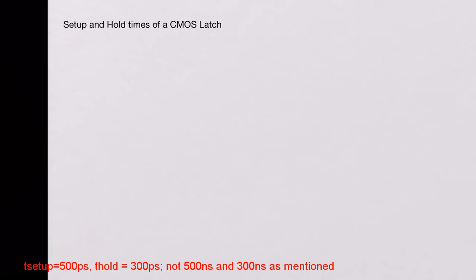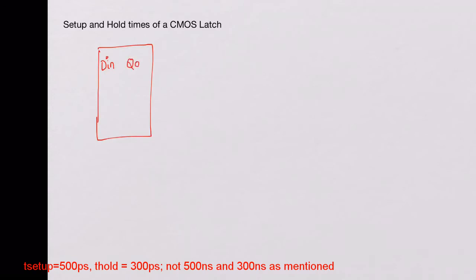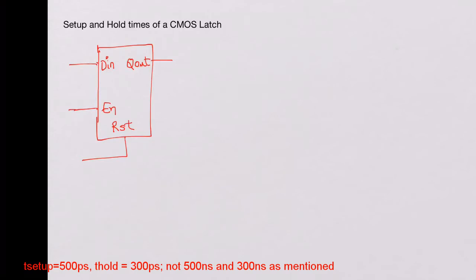I will draw a symbol view for it. We looked at a CMOS latch in a separate video. So we have an input DN and then an output Q out. DN is the input, Q out is the output, and we have an enable. We could also have a reset input, which we will not look at in this video. We will look at the relationship between DN and enable, and how Q out behaves.